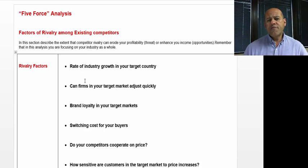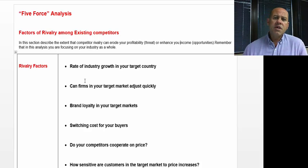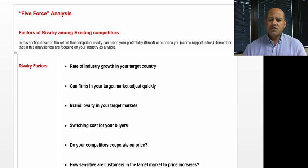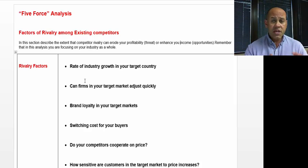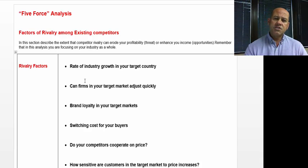Can the firms in the target market adjust quickly? In some industries, adjustments can happen very quickly — competitors have new innovations and everyone can get on board. There are other industries that can't adjust quite as quickly.